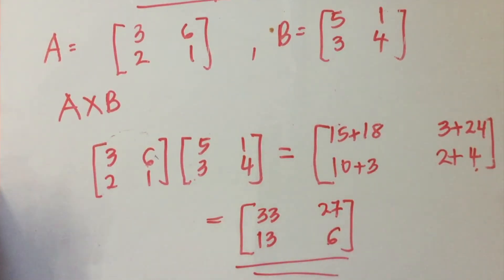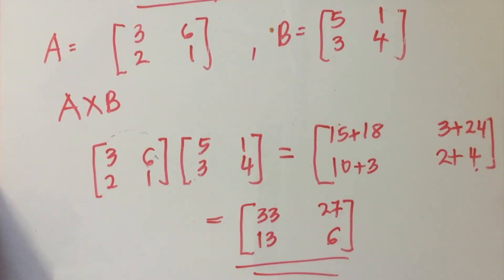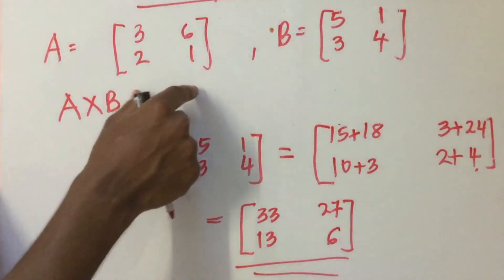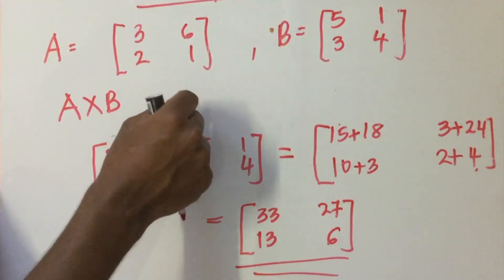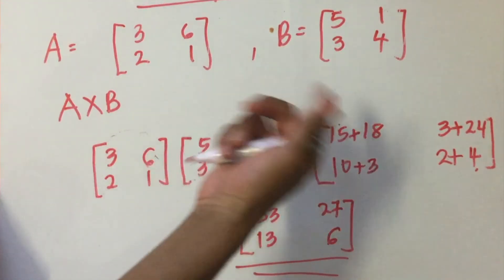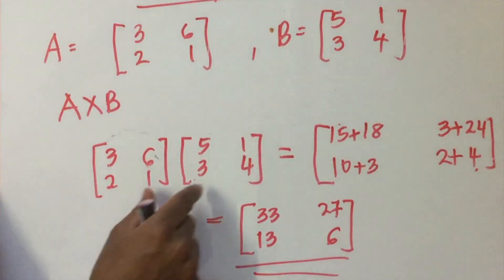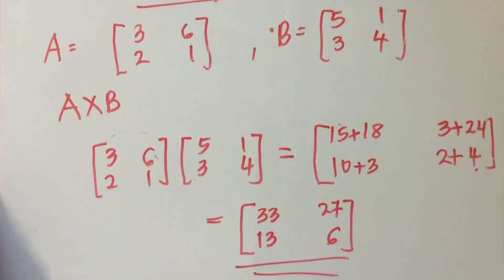27 — that is the result of the school of the matrices. The matrix was order two by two. That is the school of matrix multiplication for a two-by-two matrix.